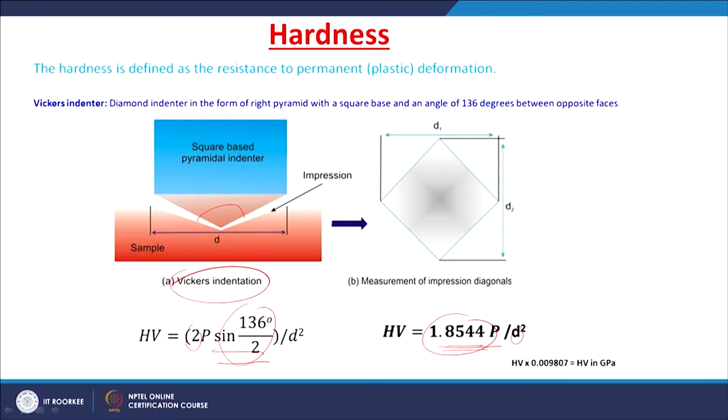Hardness is expressed in Pascals if the load applied is in Newtons. Or if the load applied is in kilograms, you multiply the hardness number by 0.009807 to get hardness in gigapascal. Generally, ceramic materials have higher hardness — more than 10 gigapascal. Certain ceramic materials like boron carbide, silicon carbide, and titanium diboride have extremely high hardness of around 25 to 30 gigapascal.